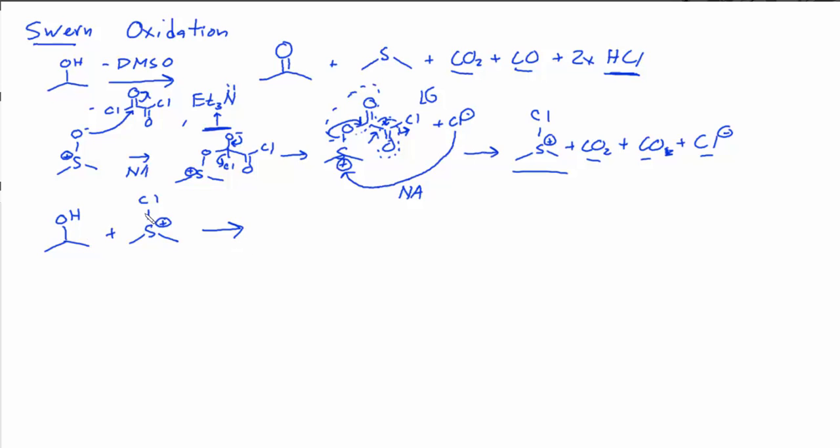So what's going to happen here, of course, is we have a good leaving group and we have an okay nucleophile. We can draw a nucleophilic attack, loss of leaving group, just like we might draw with an SN2. Because the sulfur is bigger than a carbon, it is better suited for this nucleophilic attack, even with a poor nucleophile. And so that gets us to this compound.